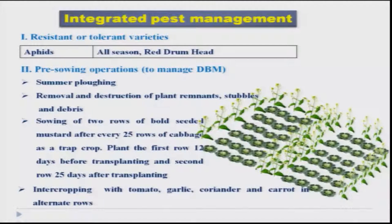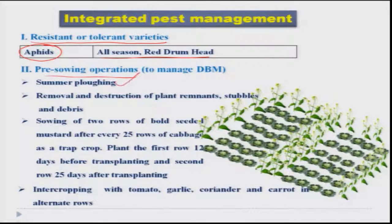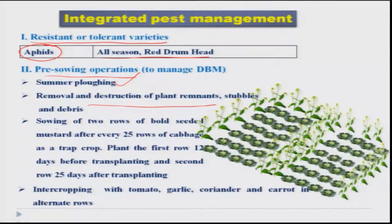For integrated management, we should first look at resistant or tolerant varieties. Against aphids, resistant or tolerant varieties are available and should be used in regions where aphid menace is more severe. Summer plowing or deep plowing before sowing is very much required as it kills many resting stages of the pest. Removal and destruction of plant remnants is also important. For diamondback moth, we should sow 2 rows of bold-seeded mustard after every 25 rows of cabbage as a trap crop.